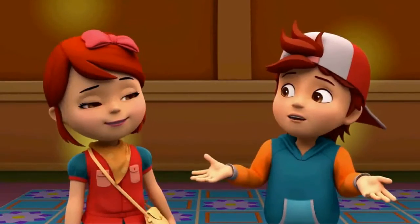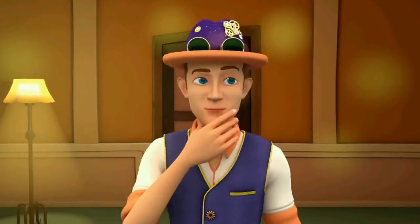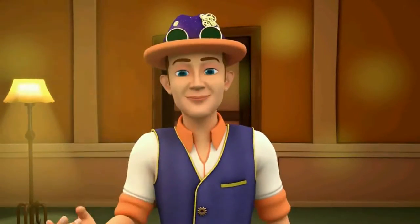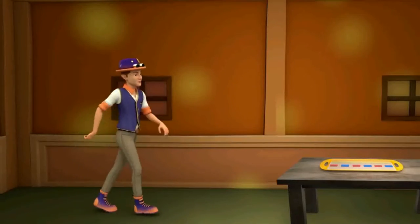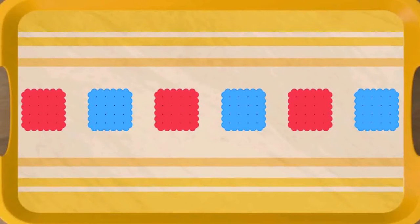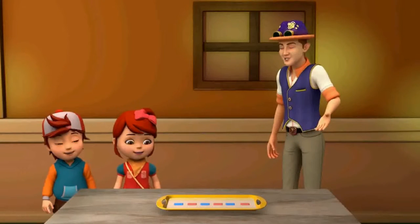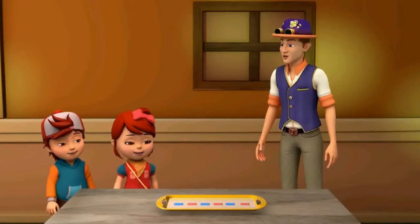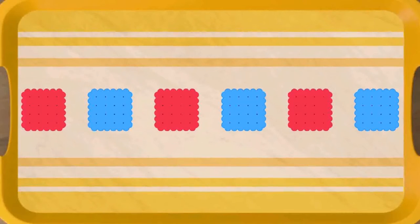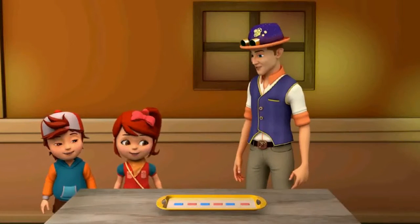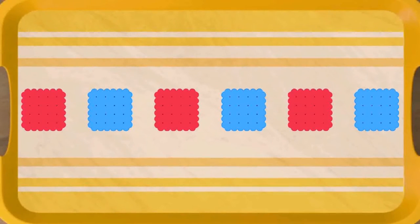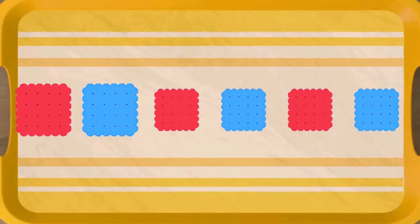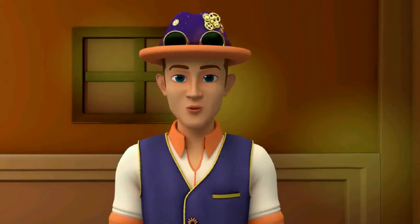So how do we know what the pattern core is? Look at these cookies. Can you find the part that repeats in this tray? There's a red one, then a blue one, red one, blue one. I see — the part with the red square and blue square. Both of them repeat together. So this portion, red and blue together, keeps repeating to form a pattern.